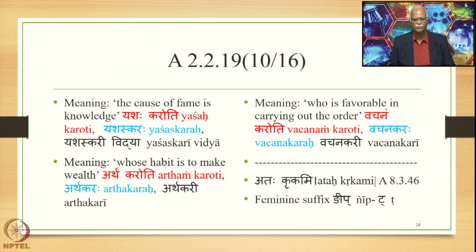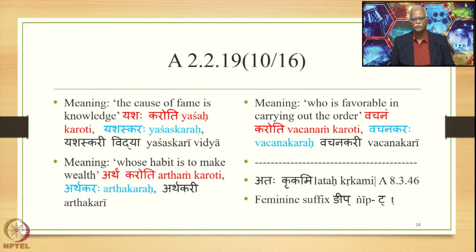If the meaning is 'knowledge is the cause of fame,' the Laukika Vigraha is Yashas karoti — Jnanam. We have Yashas plus am plus Kṛ plus T; after Samasa Saudhnya, Pratipadika Saudhnya, Sup-o-dhatu, Svalopa, and Sarvadhatu Kardadhuka application, we get Yashaskara. The feminine form Yashaskari is derived by adding Nip triggered by marker T. Similarly, Artham karoti gives Arthakara (habit: one who habitually makes wealth); Vachanam karoti gives Vachanakara (favorability: one favorable to carrying out orders), with feminine forms Arthakarhi and Vachanakarhi.